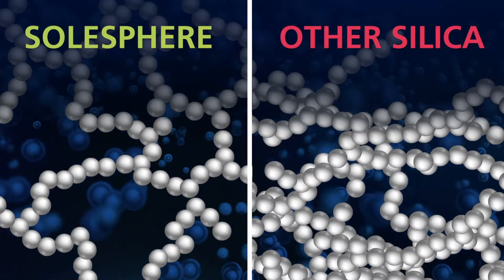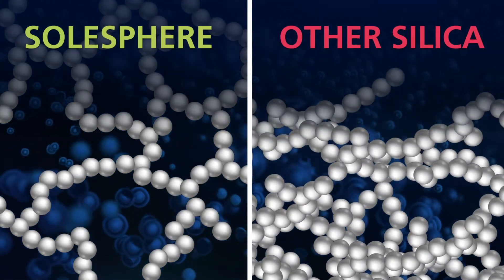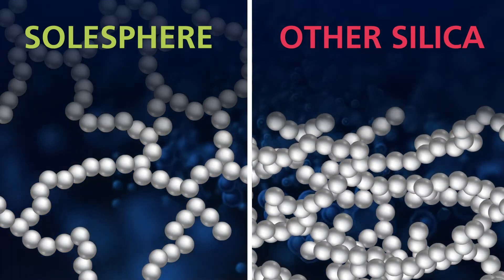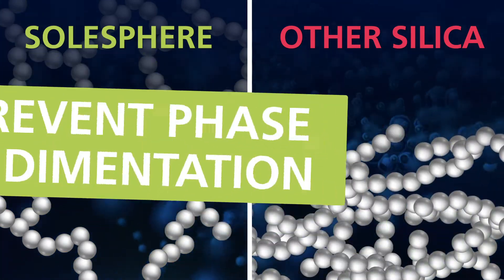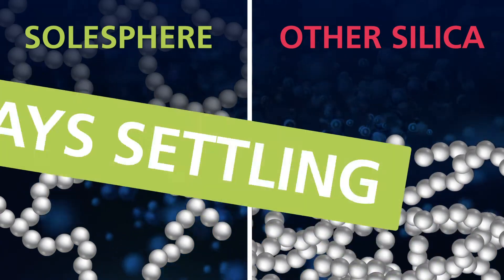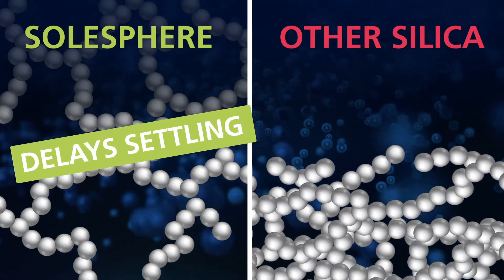Instead of settling downward in the resin during storage, Solosphere's functional surface chemistry provides a network within the polymer matrix. This helps prevent phase sedimentation and delays the settling process in the resin during storage.